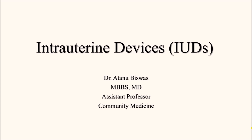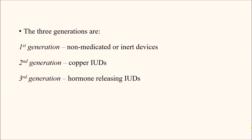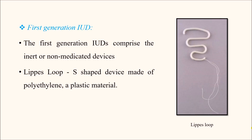We are continuing with different family planning methods, and today we shall discuss the intrauterine devices, or IUDs. As the name suggests, IUDs are placed inside the uterine cavity. IUDs can be either non-medicated or medicated. Medicated IUDs release either a metal ion — which is copper — or a hormone, which is progestogen. There are three generations of IUDs: first, second, and third. First generation IUDs are the non-medicated or inert devices, second generation are the copper devices, and third generation are the hormone-releasing devices.